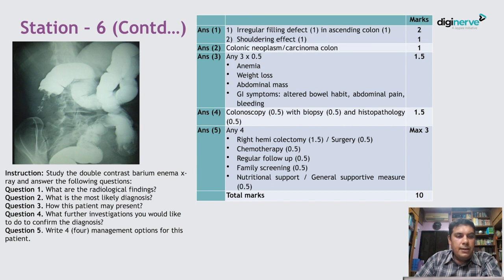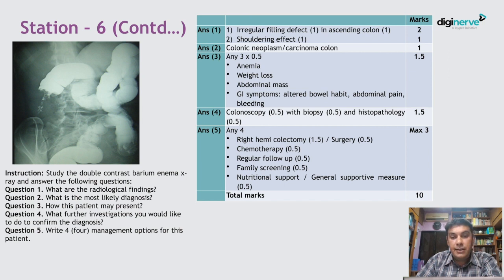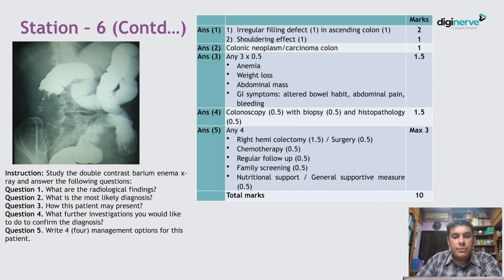To confirm the diagnosis, colonoscopy with biopsy and histopathology can be done. For management options, write hemicolectomy or surgery — if you write specifically hemicolectomy you will get the full marks of 1.5. Other management options include chemotherapy, regular follow-up, family screening, and nutritional support or general supportive measures.